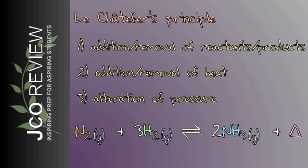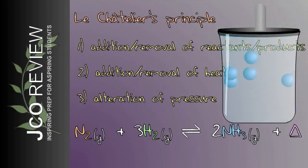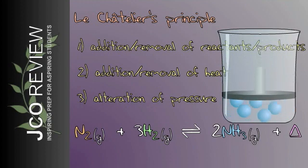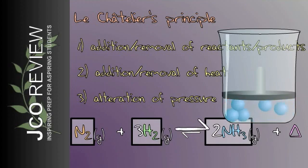Lastly, suppose we increased the pressure of the system by decreasing the container size. The left side of the reaction has four moles of gas, whereas the right side only has two. Under the increased pressure, the reaction will shift to the right, thereby lowering the number of moles and alleviating the overcrowding.